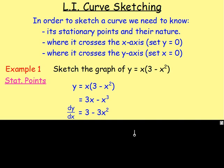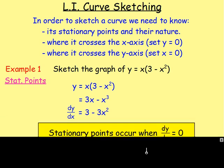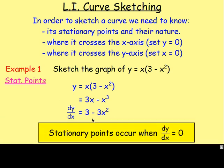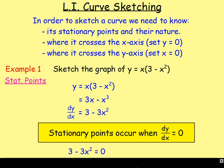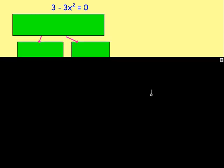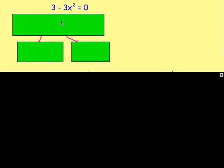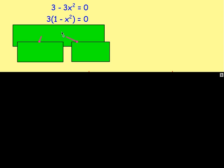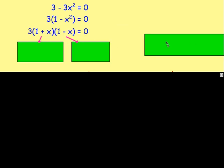Stationary points occur when dy/dx equals zero. So set dy/dx equal to zero: 3 minus 3x squared equals zero. From there you can solve to find x — factorize, taking out 3 as the highest common factor. Then you've got a difference of two squares, giving 3(1 plus x)(1 minus x) equals zero.